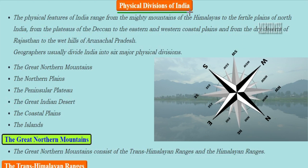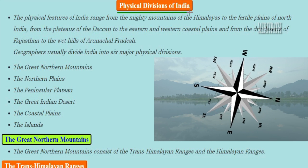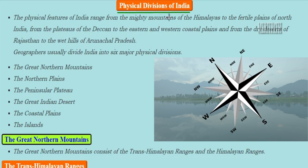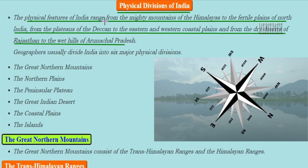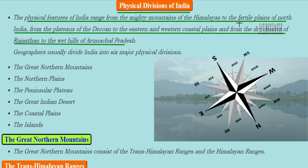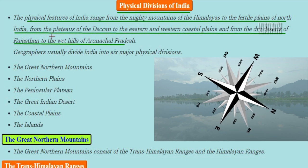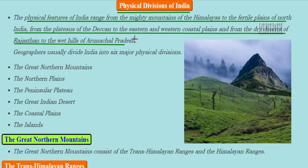Let's learn about the physical divisions of India. The physical borders of India include the mighty mountains of the Himalayas and the fertile plains of North India on the northern side, the Deccan Plateau in the south, eastern and western coastal plains, the dry desert of Rajasthan, and the wet hills of Arunachal Pradesh in the northeast.